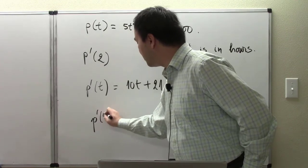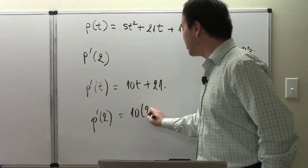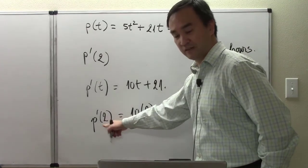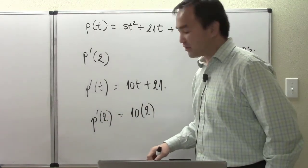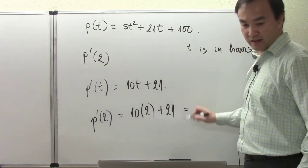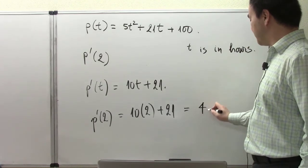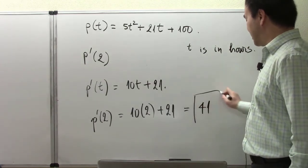p'(2) is simply 10 times 2 - at 2 hours after - plus 21, and that is going to give me 41.